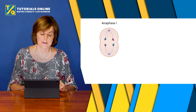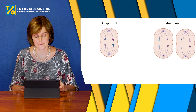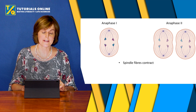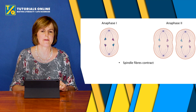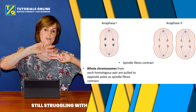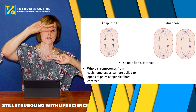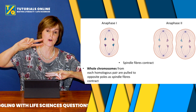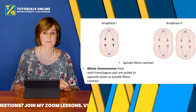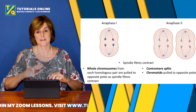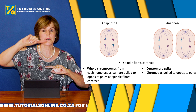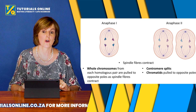In anaphase I and anaphase II, the spindle fibers contract and pull on the chromosomes. In anaphase I, the whole chromosomes from each homologous pair are pulled to opposite poles. Whereas in anaphase II, the centromere splits and one chromatid moves to one end while the other chromatid goes to the opposite pole.